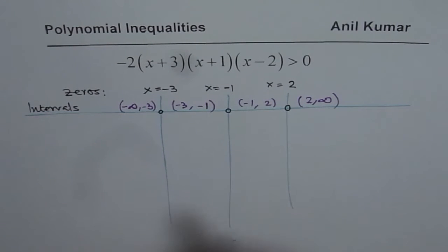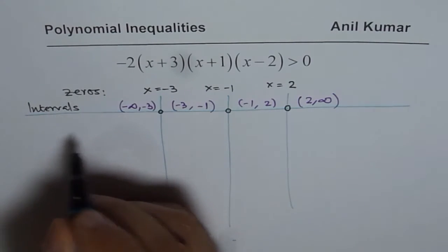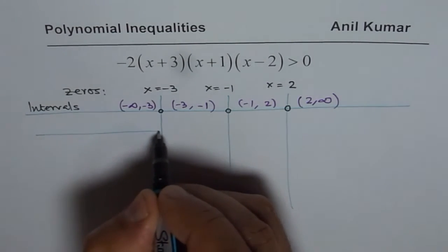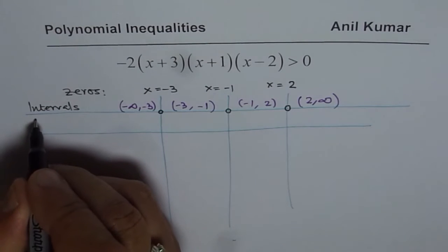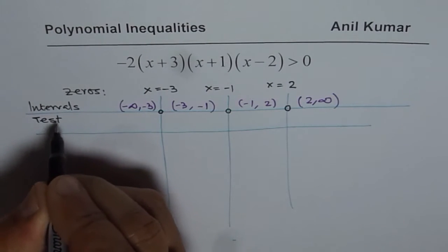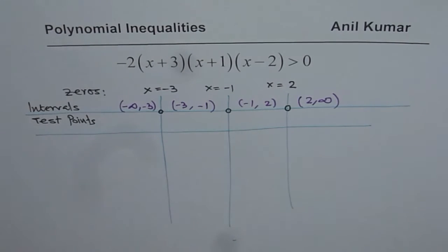Now during these intervals, the sign of the function always remains the same. It only changes at zeros. That is the concept. So what we can do is take some test points. We will take test points in the given intervals and see whether the function is positive or negative.